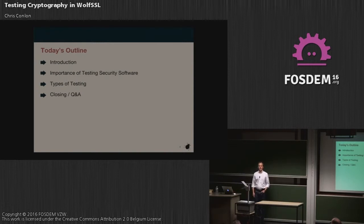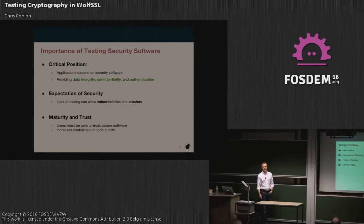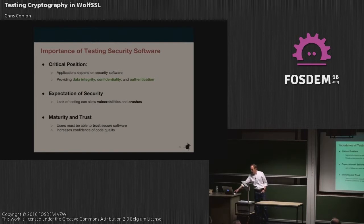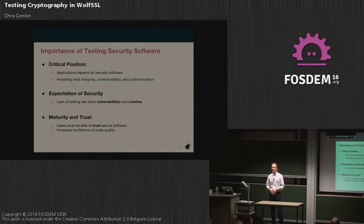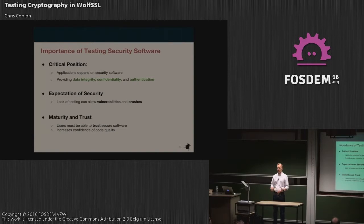Today's outline: I'll go through a quick introduction and the types of testing that we do. Hopefully we'll have some time at the end for questions. Why is testing important, especially in security software? Security software is really one of the core pieces of your application, especially if you're dealing with user data — securing data in transit or at rest. You really need to make sure your users can trust your application, and indirectly, they're trusting the security you're using. It helps to know it's well tested, well vetted, widely used, and that there are many eyes looking at the code base.